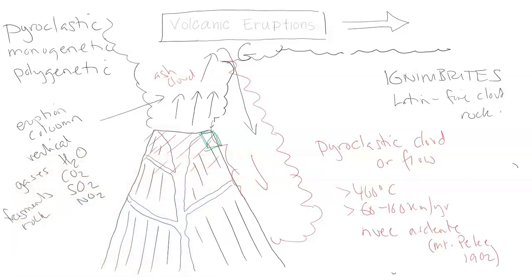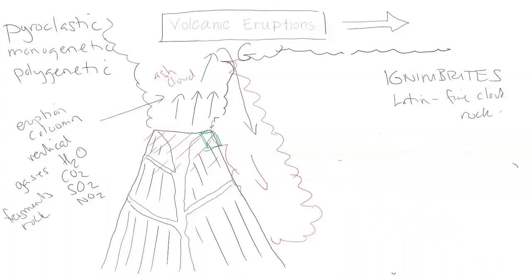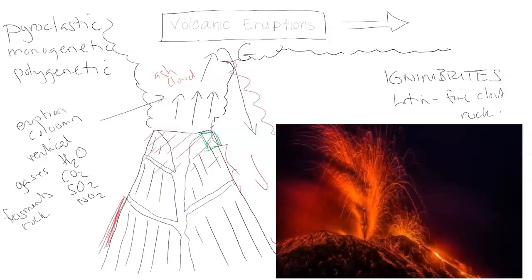In addition to the tephra — the accumulation of ash deposits on the ground — which will suffocate people, cover soil, cover roofs, and collapse building structures, you also get lava. You might have lava coming out of a side vent, or you might have cracks and fissures open up in parts of the volcano, depending on the eruption.